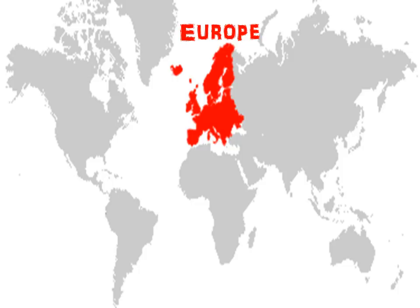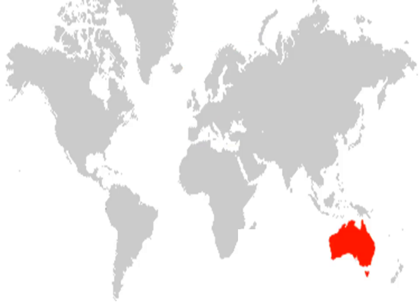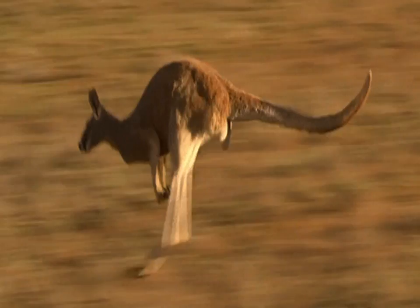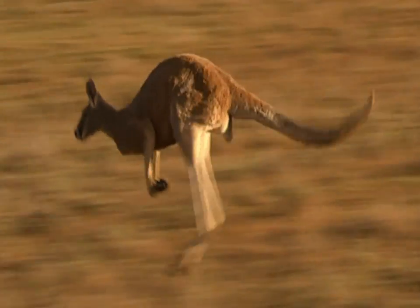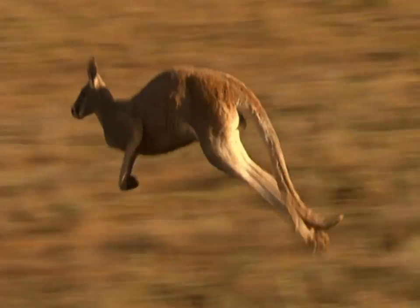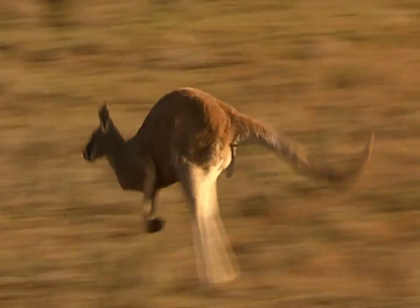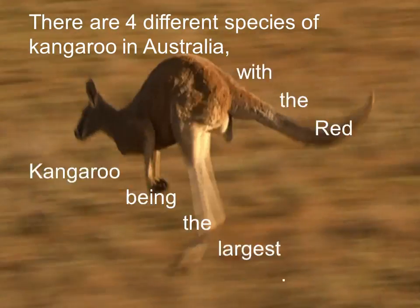Next, we have the smallest of all the seven continents. Yes, that is Australia. It is the least populated continent after Antarctica. The Australian continent consists of the Australian mainland and some big islands such as New Zealand, Tasmania and New Guinea.